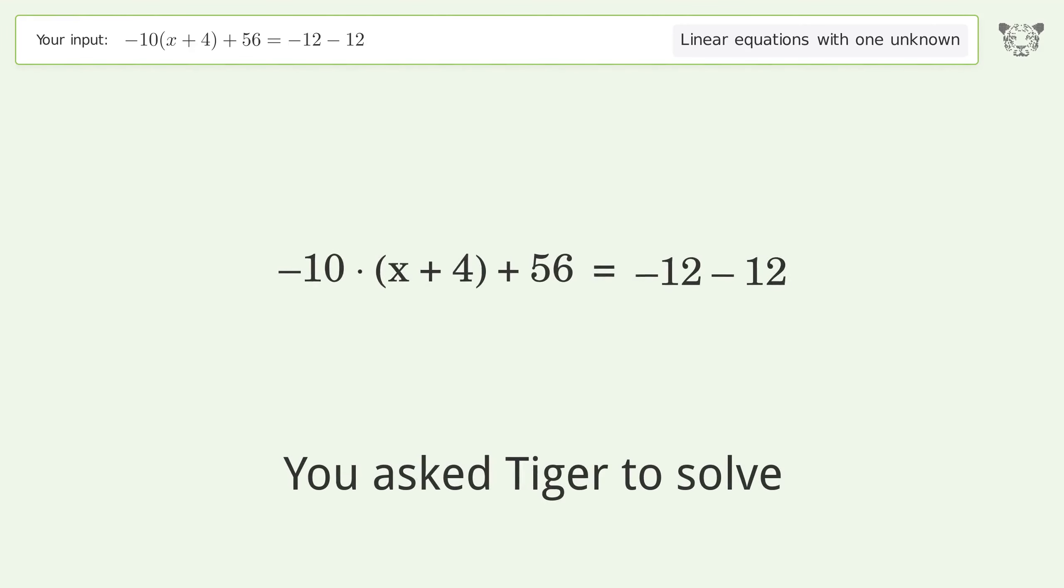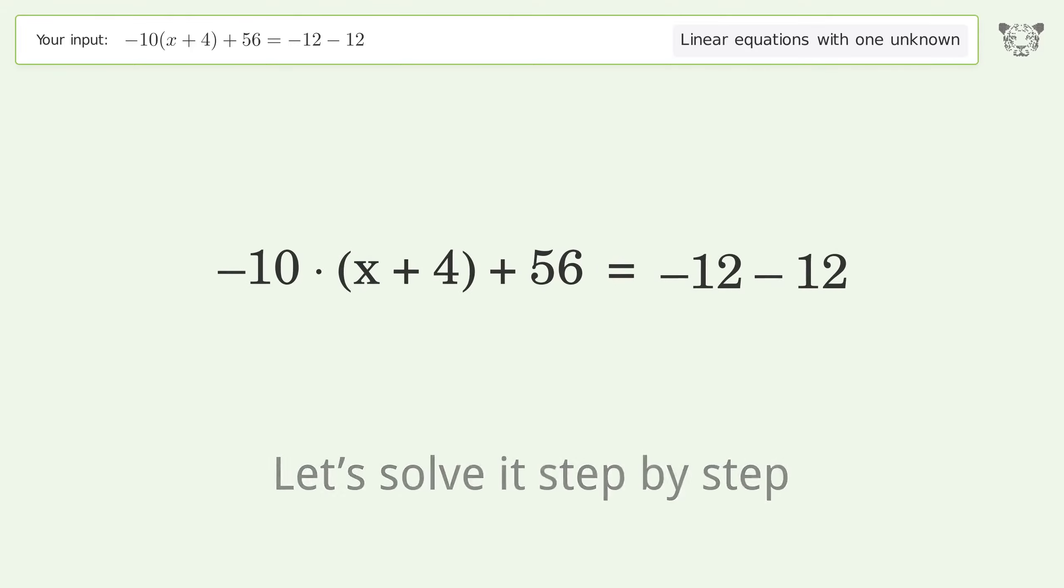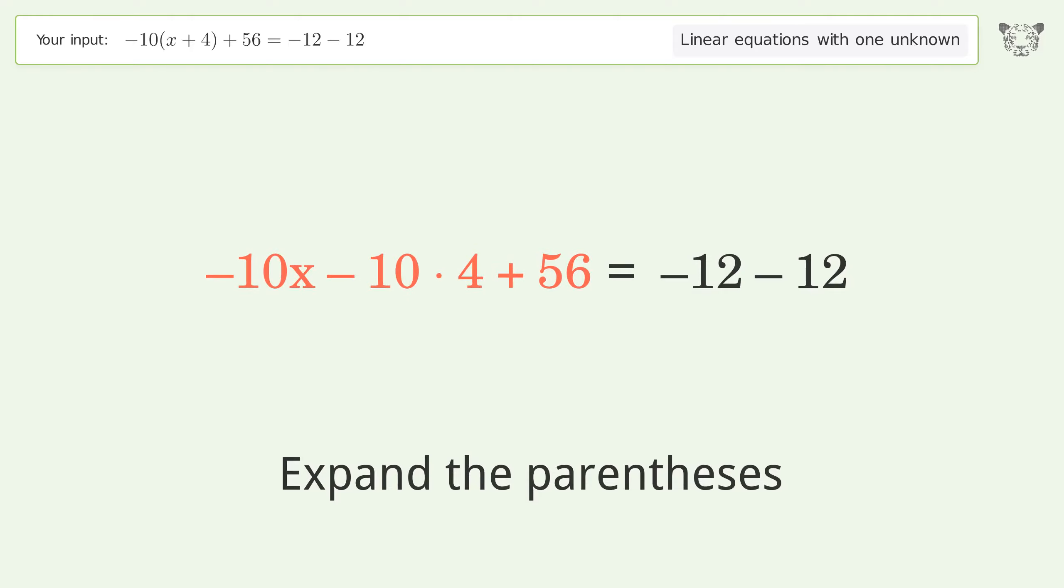You asked Tiger to solve this. It deals with linear equations with one unknown. The final result is x equals 4. Let's solve it step by step. Simplify the expression, expand the parentheses, simplify the arithmetic.